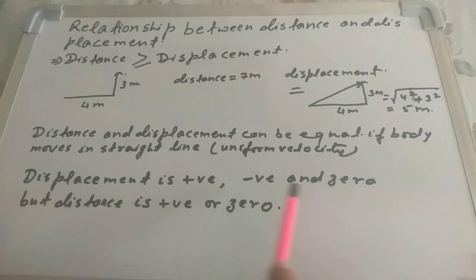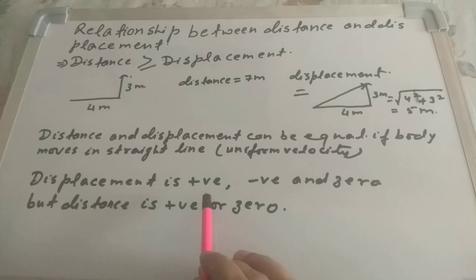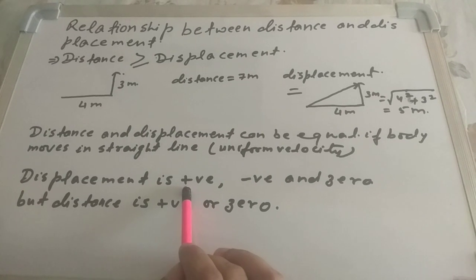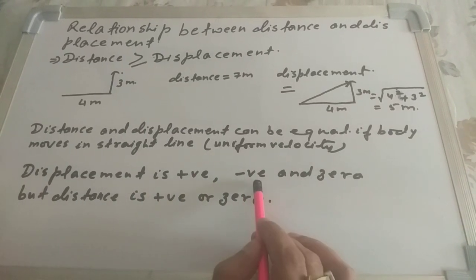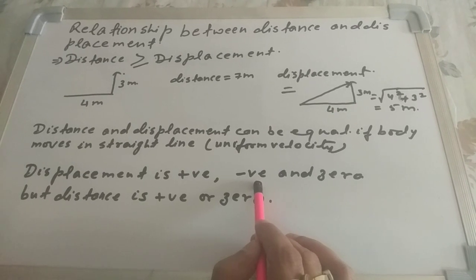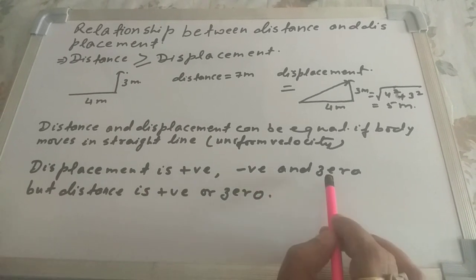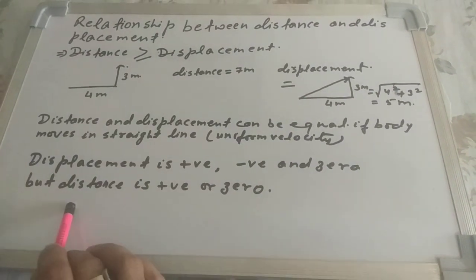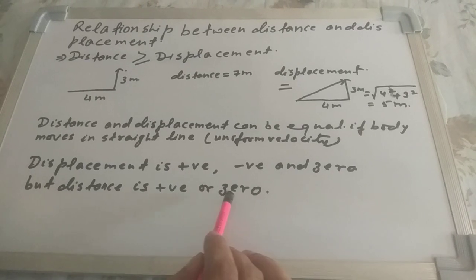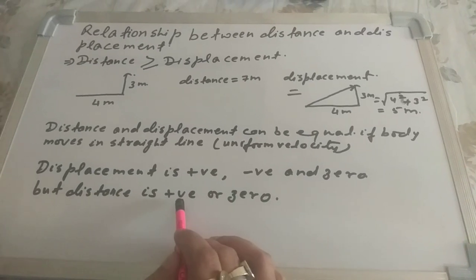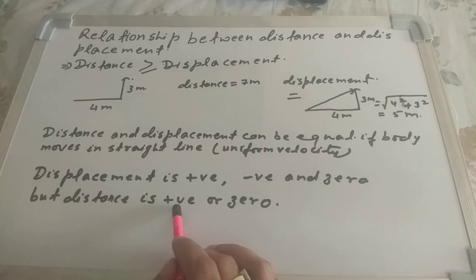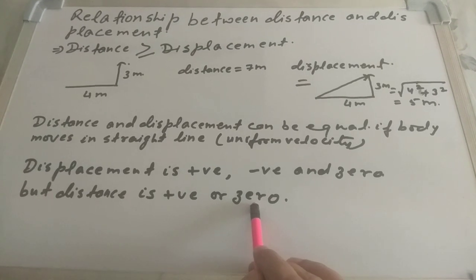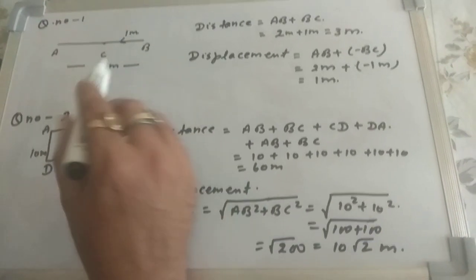Displacement can be positive, negative, or zero. If the final position is ahead of the initial position, displacement is positive. If the final position is behind the initial position, displacement is negative. If the final and initial positions are the same, displacement is zero. But distance is always positive or zero — we take the total path length. Distance is zero only when the body is at rest.